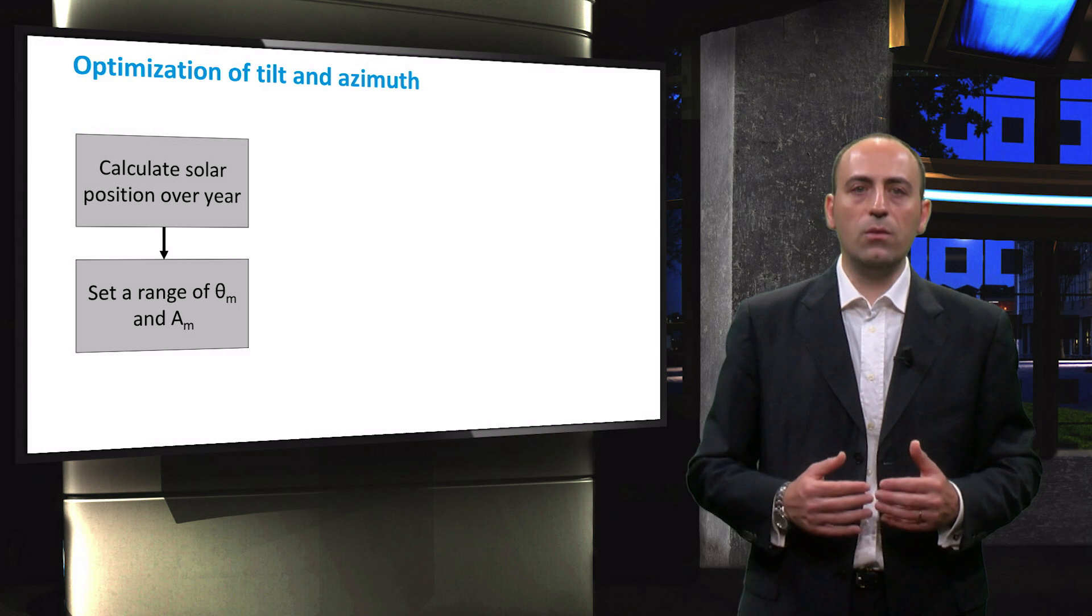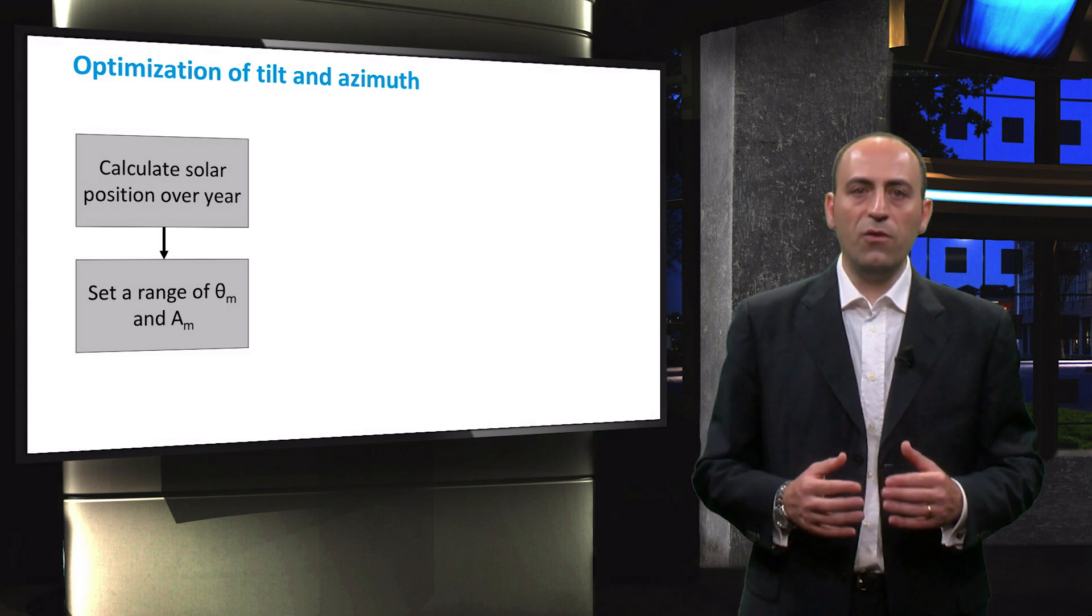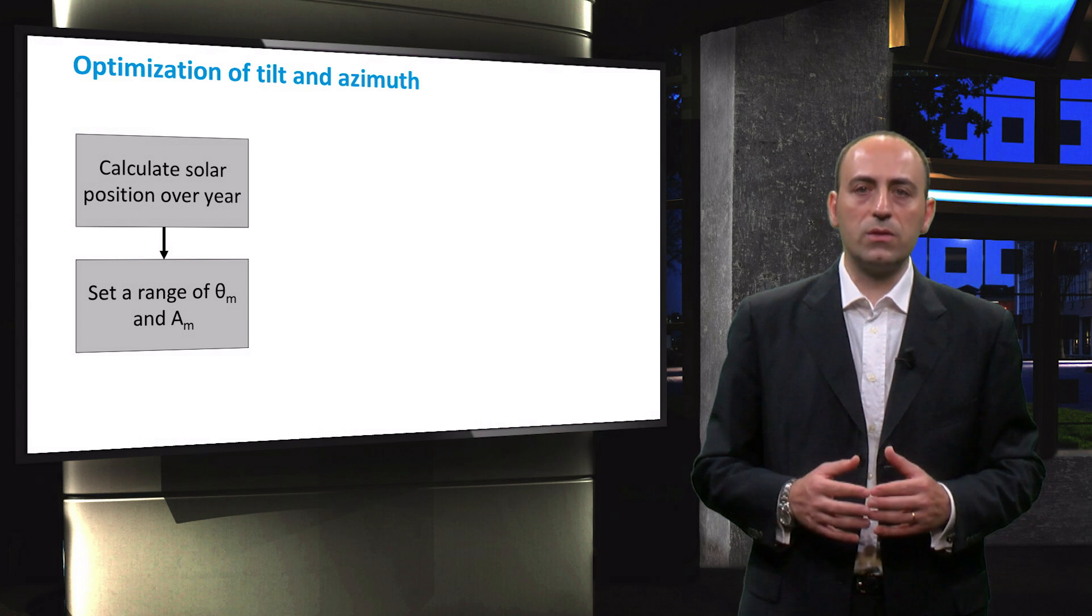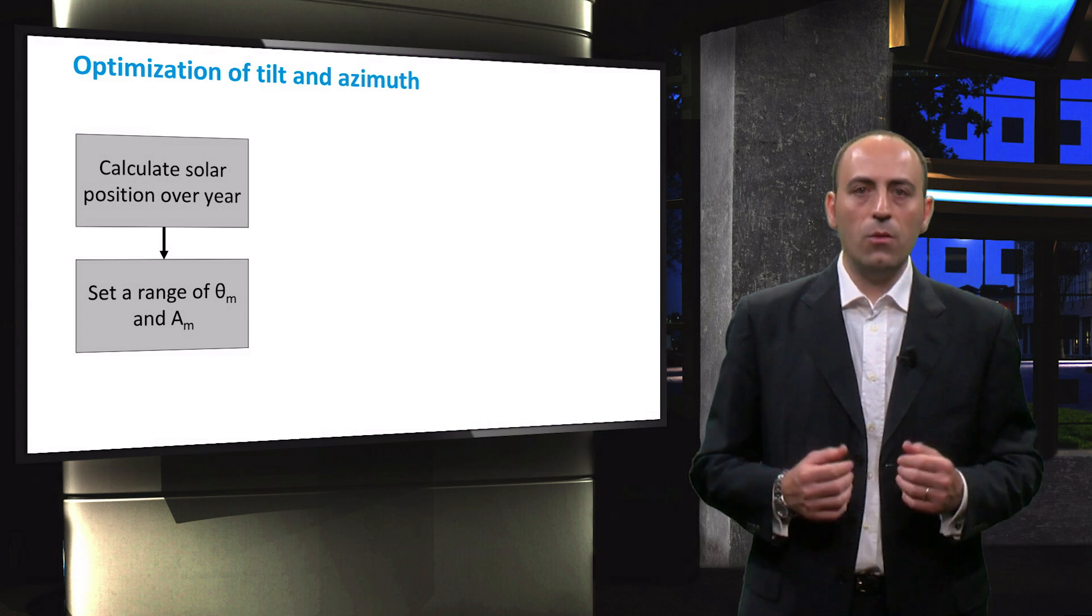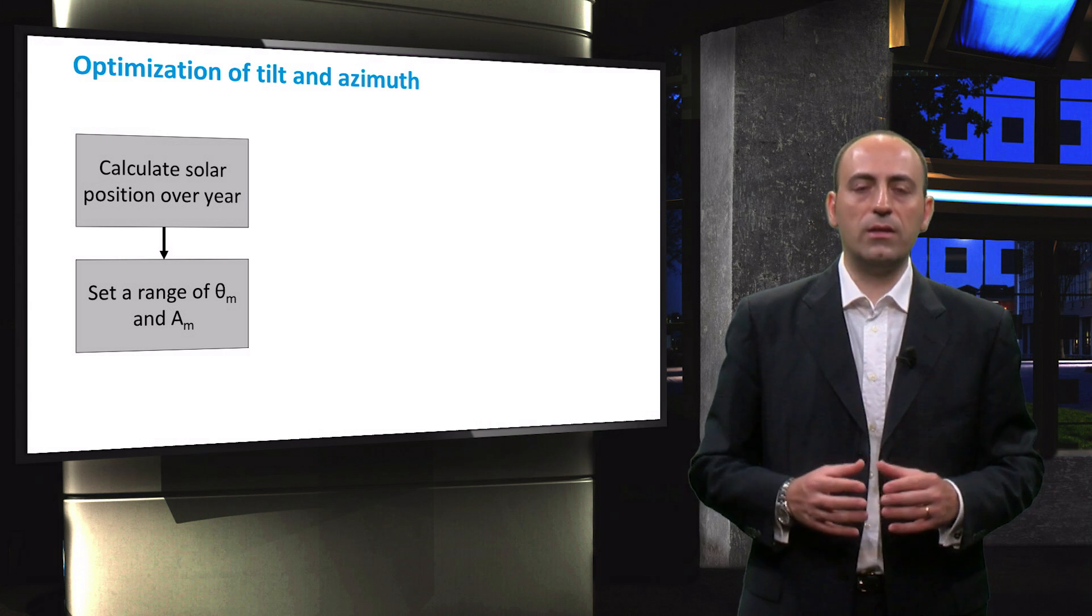After computing the azimuth and altitude of the sun with respect to the location of your PV system, you have to decide what range of tilt and azimuth angles to investigate. If you want to consider all possible angles, the tilt angle will range from 0 to 90 degrees. The range of azimuth angles can be the complete circumference of 360 degrees.